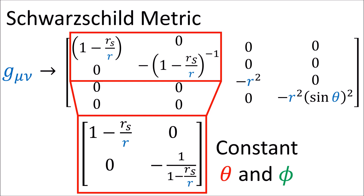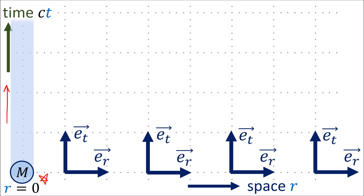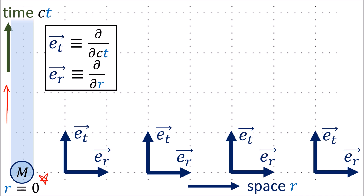So I'm only going to use the ct and r entries from the Schwarzschild metric. On a spacetime diagram, the center of the mass would be located at r equals zero as it moves through time, where time points upward on the spacetime diagram. Given these coordinate lines for ct and r, the tangent vectors along these lines would give us the basis vectors et and er, which are the partial derivatives with respect to the ct and r coordinates, respectively.